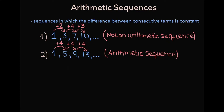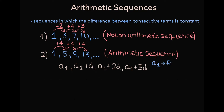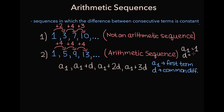Arithmetic sequences can be written using a general form, where a1 represents the first term in the sequence and d represents the common difference between consecutive terms. So for the arithmetic sequence that begins with 1, 5, 9, and 13, a1 would be 1 and d would be 4.